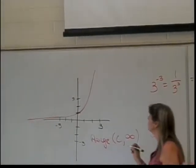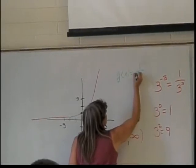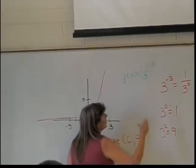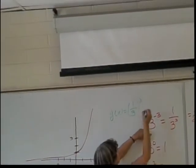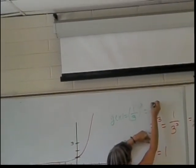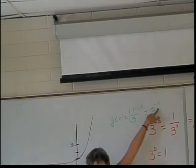Yeah, so if you were to graph G of X equals one-third to the X, now keep in mind this is very similar to looking at this thing. This was the same thing then as 3 to the negative X. What happens when I switch the X to be negative?